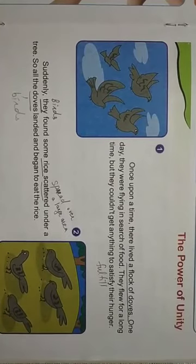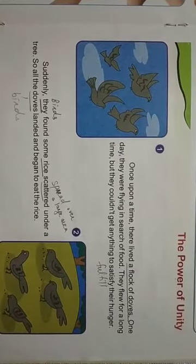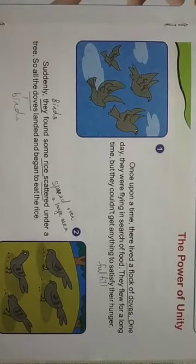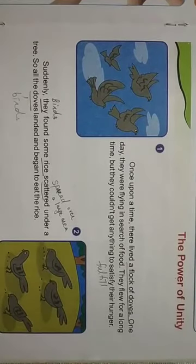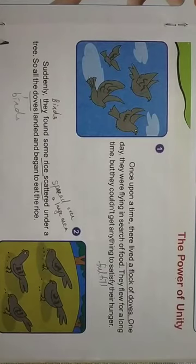One day a group of doves who were very hungry, they flew from one place to another in search of food. But they didn't get anything which could satisfy their hunger. Suddenly they found some rice scattered under a tree. Scattered means spread over a small area or a large area.